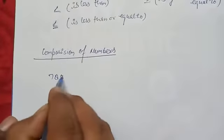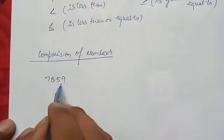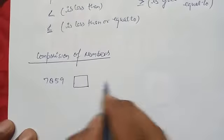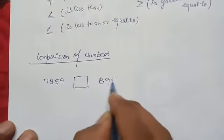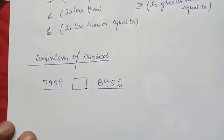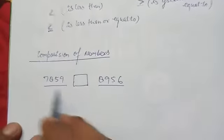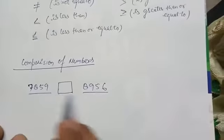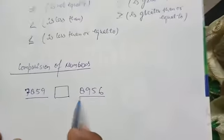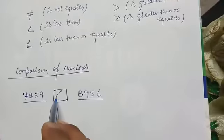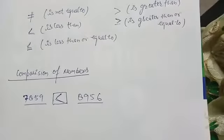Here we have 7, 8, 9, 5 — these are four digits. And here we have 8, 9, 5, 6 — also four digits. For comparison, we take one digit at a time. Here the first digit is 7 and here it is 8, so this second number would be the greater number.